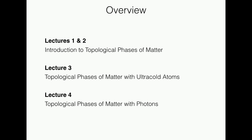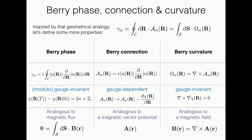Where did we leave off yesterday? We had talked about the idea of a geometrical Berry phase, because my aim was to explain the quantum Hall effect, which is perhaps the most famous and, in my view, probably the most important example of a topological phase of matter. I talked about how we can think of a geometrical phase that arises in quantum mechanics when we take a system and let it undergo an adiabatic evolution. The adiabatic point was very important: if our system was prepared in a particular eigenstate, it remained in that eigenstate after a closed contour of evolution in parameter space, up to phase factors which could include that Berry phase.